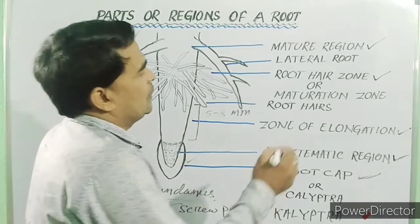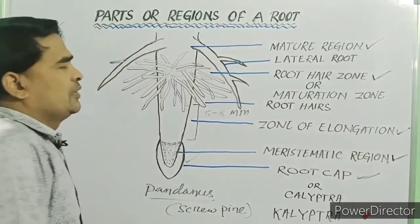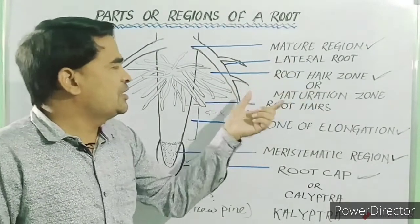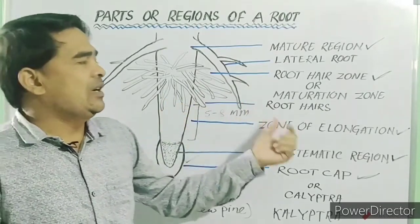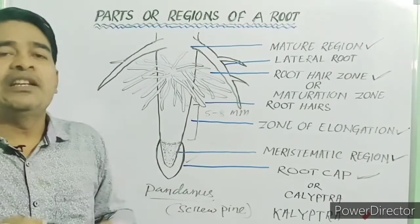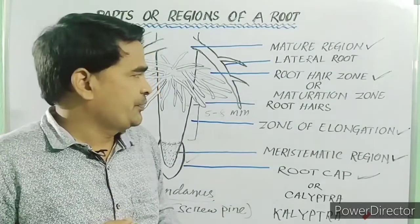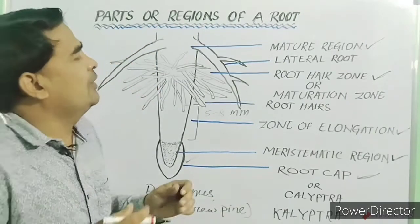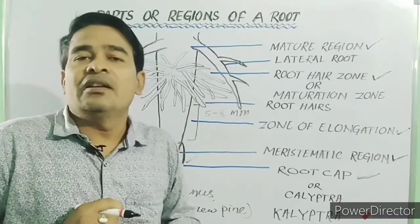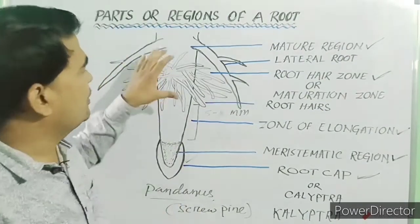Then, we will study the root hair zone. This root hair zone is present behind the zone of elongation. And it is also called the zone of differentiation or the maturation zone. And in this zone, differentiation in root takes place. Differentiation of primary tissues takes place in this zone.